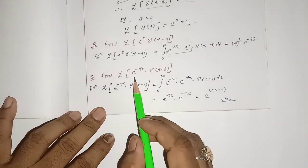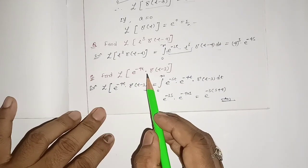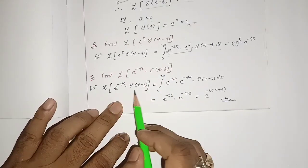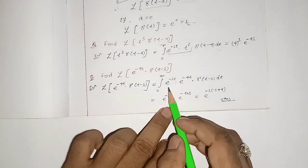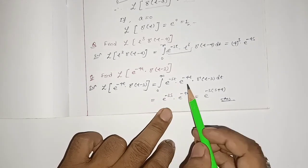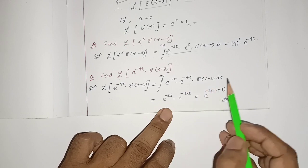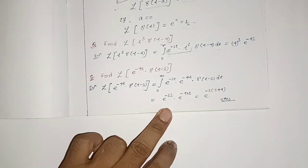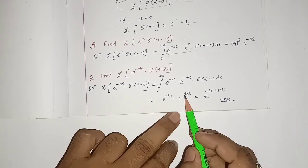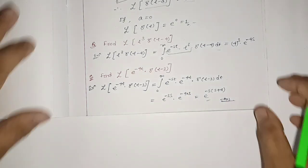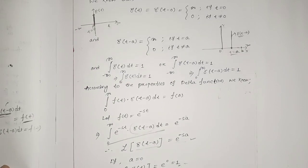Similarly, find the Laplace transform of e^(-4t) δ(t - 3). Writing the Laplace transform: ∫₀^∞ e^(-st) · e^(-4t) · δ(t - 3) dt. Substituting t = 3, we get e^(-3s) · e^(-4·3) = e^(-3s) · e^(-12). This will be the answer. Thank you for watching this video.